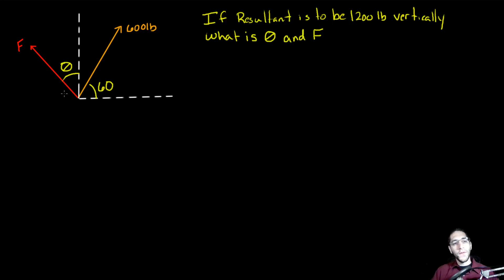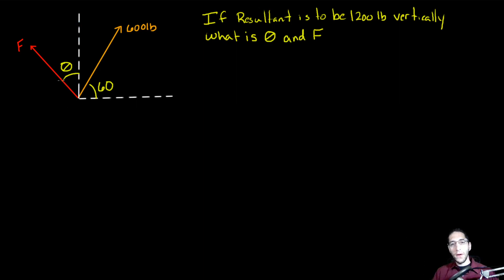In this problem we're given two forces: force F, which makes an angle of theta degrees with the y-axis, and a force of 600 pounds that makes an angle of 60 degrees with the x-axis. We're asked that if our resultant is to be 1,200 pounds vertically along the y-axis, what is theta and what is F?